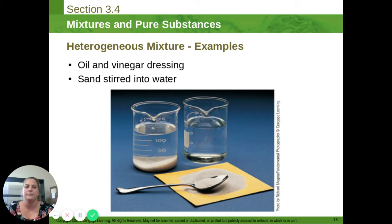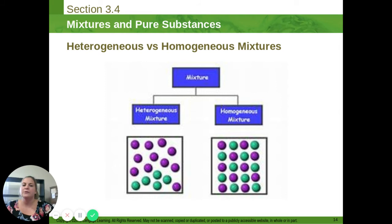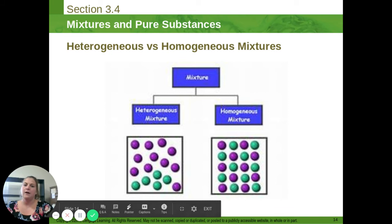Particle diagram. If we have mixtures, we have those two different kinds. This one kind of shows that they're all mixed up throughout and you can't tell the difference. Whereas the heterogeneous mixture, one thing clusters in one area, the rest are in the remaining area.